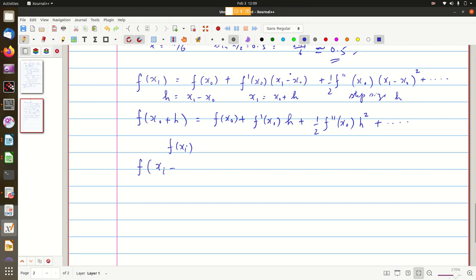Then I will have f of x1 plus h to be equal to f of x1. So x1 plus h is nothing but x_{i+1}. And this is f dash of x1 into h plus half f double dash of x1 into h squared etc.